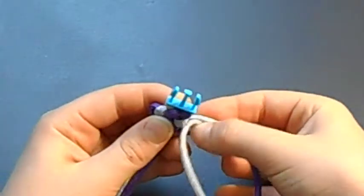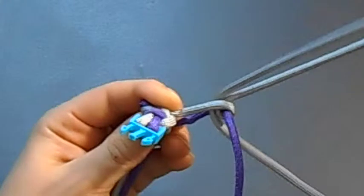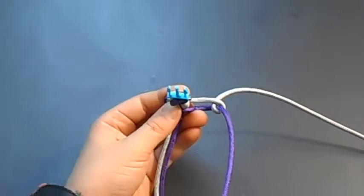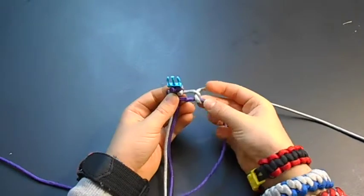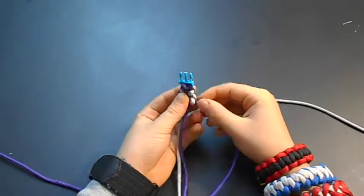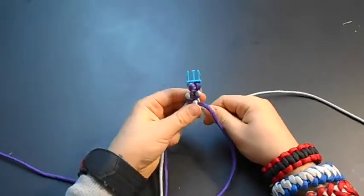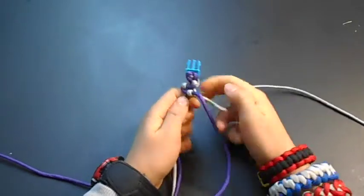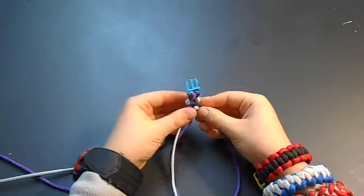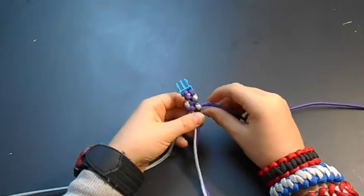And you go under like this, through that loop that you made, like that. There we go. We've got our third knot done. And I'll do two more knots and then skip to the end.